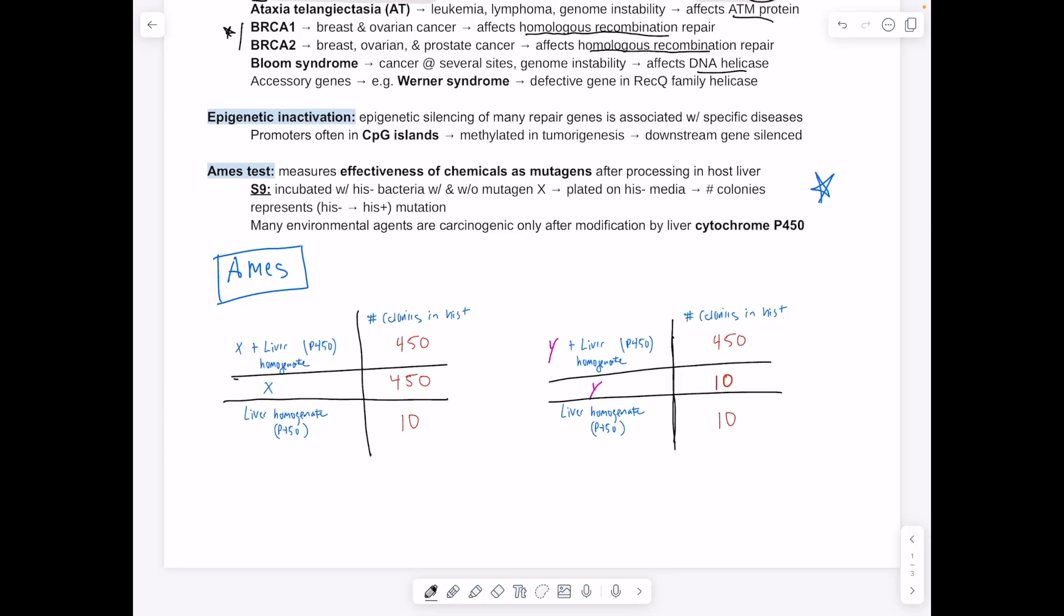Ames test is important to know. This one's come up on a couple of practice problems. Basically, you're trying to check whether or not a chemical is a mutagen. You grow cells on His- bacteria, then you plate it onto His+ agar plates. The idea is that you shouldn't have these cells survive, but if they do survive, it's because the mutagen X, the chemical X, has caused a mutation and allowed these bacteria to form colonies. You can determine whether or not X is going to act as a mutagen by comparing it, by giving it to these bacteria and seeing if they survive. We have the bacteria cell plus liver homogenate, which is going to contain the enzyme P450. This acts as our control.